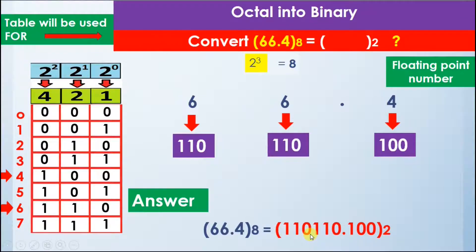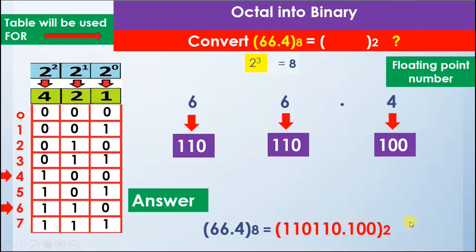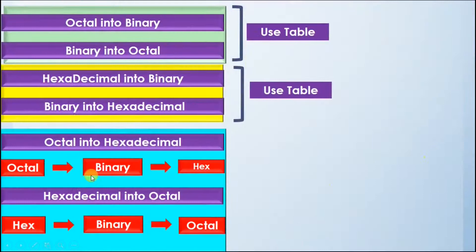We can write the answer: 1 1 0 comes from the first digit, 1 1 0 comes from the second digit, then the decimal point maintains its position, and 1 0 0 comes from the digit 4. So the value 66.4 in octal is equal to 1 1 0 1 1 0 dot 1 0 0 in binary. We have completed the first part.